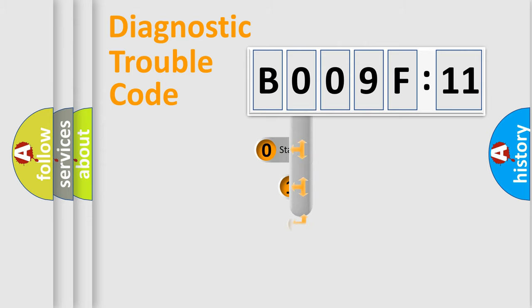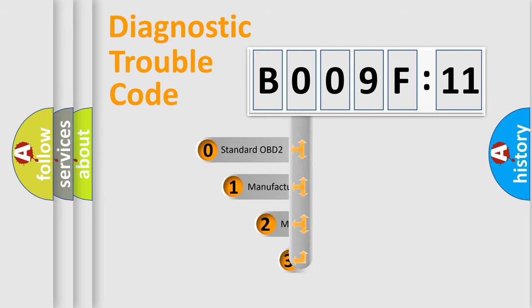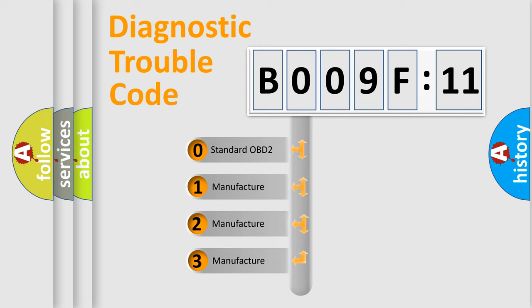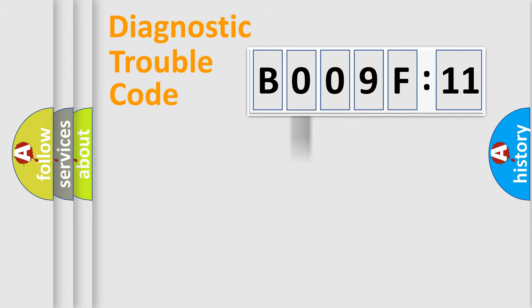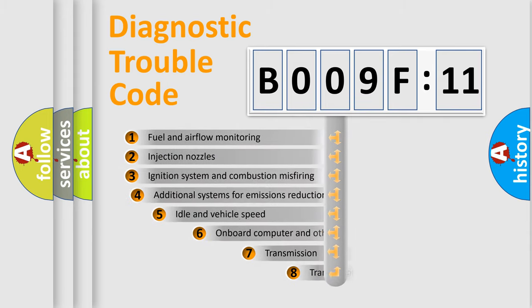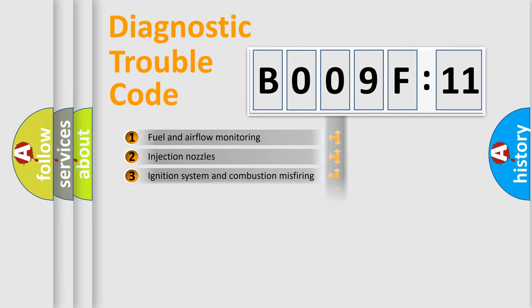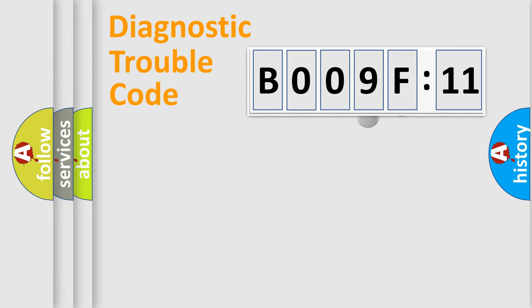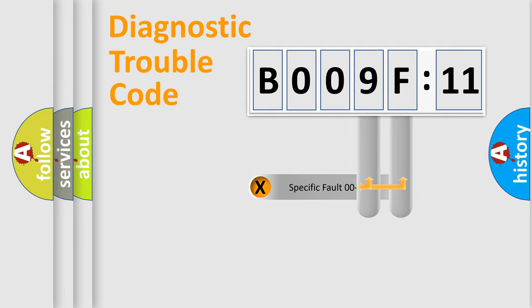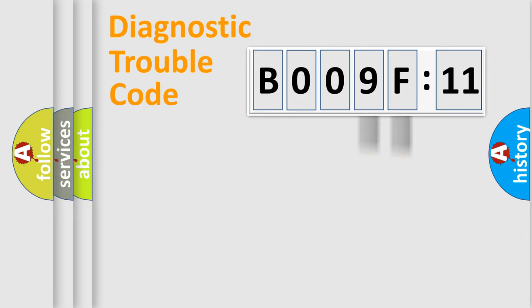This distribution is defined in the first character of the code. If the second character is expressed as zero, it is a standardized error. In the case of numbers 1, 2, or 3, it is a more specific manufacturer-defined error. The third character specifies a subset of errors. This distribution is valid only for the standardized DTC code. Only the last two characters define the specific fault of the group.